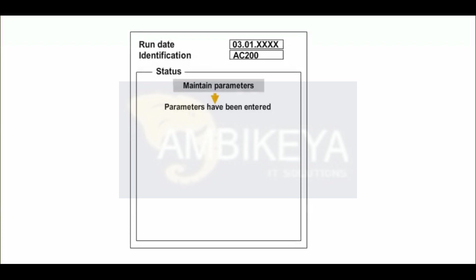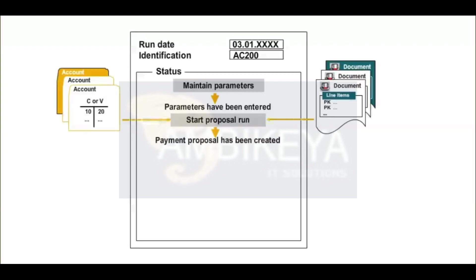Step 2 is the proposal run. During the proposal run, the system does the following: checks the accounts and documents specified in the parameters for due items, groups items due for payment, and selects the relevant payment methods, house banks, and partner banks.